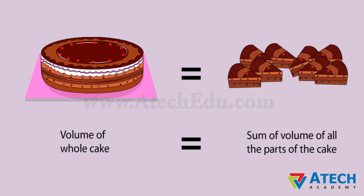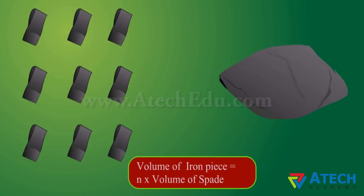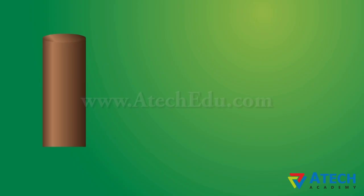Let us take another example. If an iron piece is converted into other shapes, then the volume of the iron piece is preserved. In many cases, a single item is converted into a number of other items. In this case also, the volume of the numerous items made from the parent item is equal to the volume of the parent item.